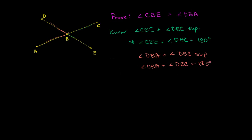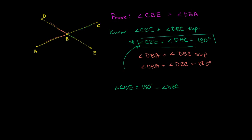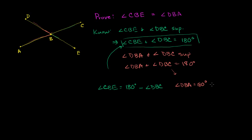Now, from the first equation, we can subtract angle DBC from both sides, and we get angle CBE is equal to 180 degrees minus angle DBC. And doing the exact same thing to the second equation — subtracting angle DBC from both sides — we get angle DBA is equal to 180 degrees minus angle DBC.